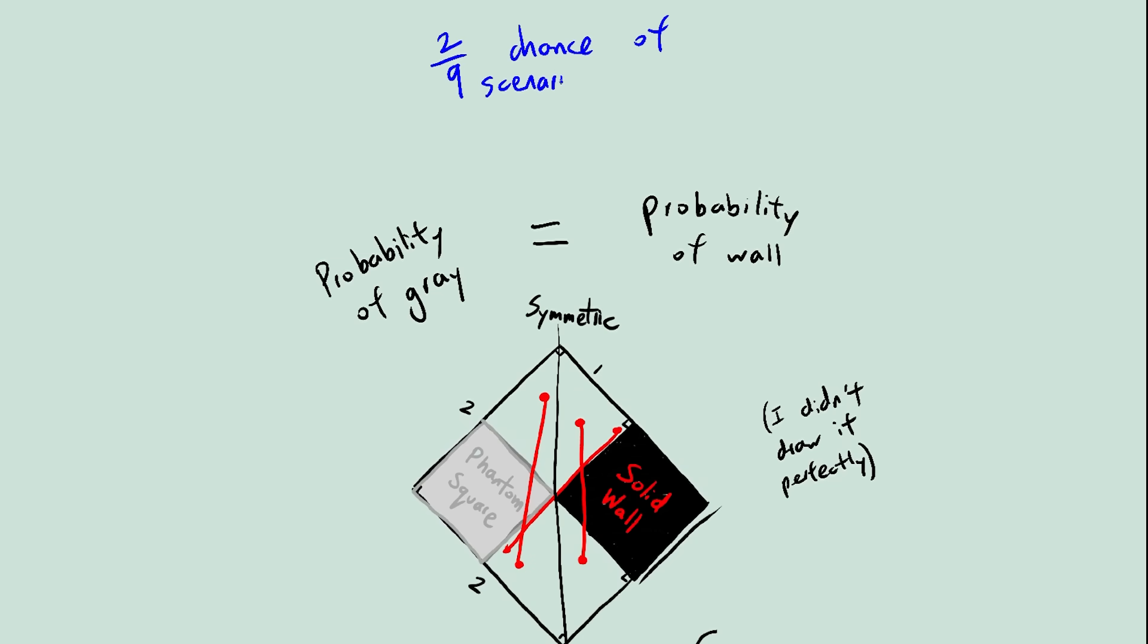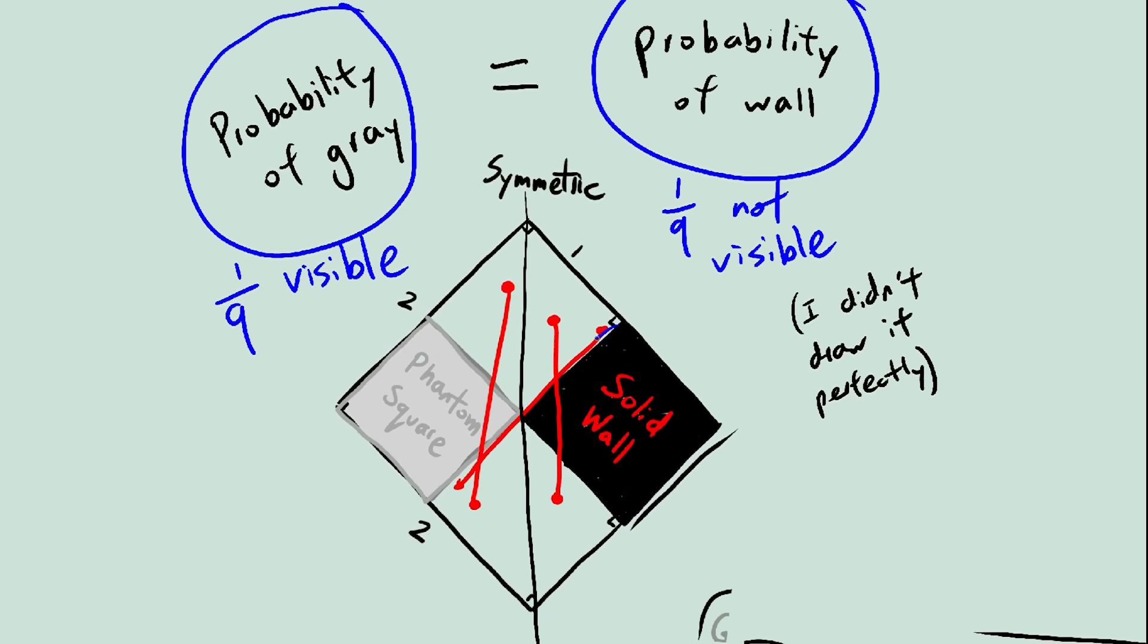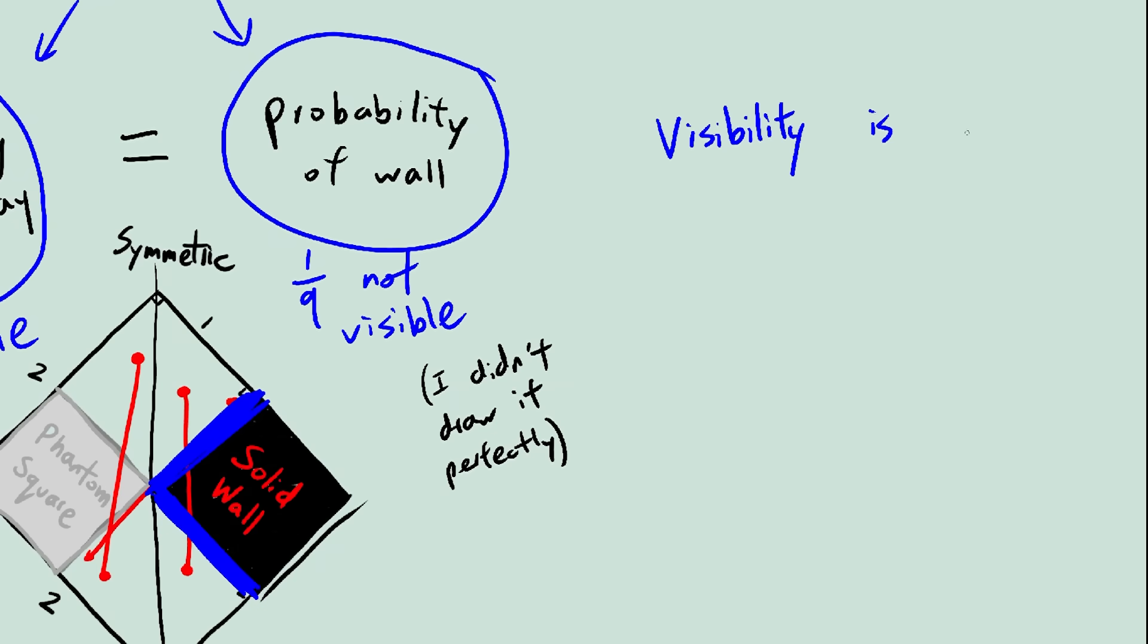So the 2 over 9 chance from earlier is split in half. 1 in 9 chance of going through gray square, and 1 in 9 chance of going through wall square. And we also know from earlier that only these two walls can block visibility. In other words, visibility is only blocked if the line goes through the wall square.